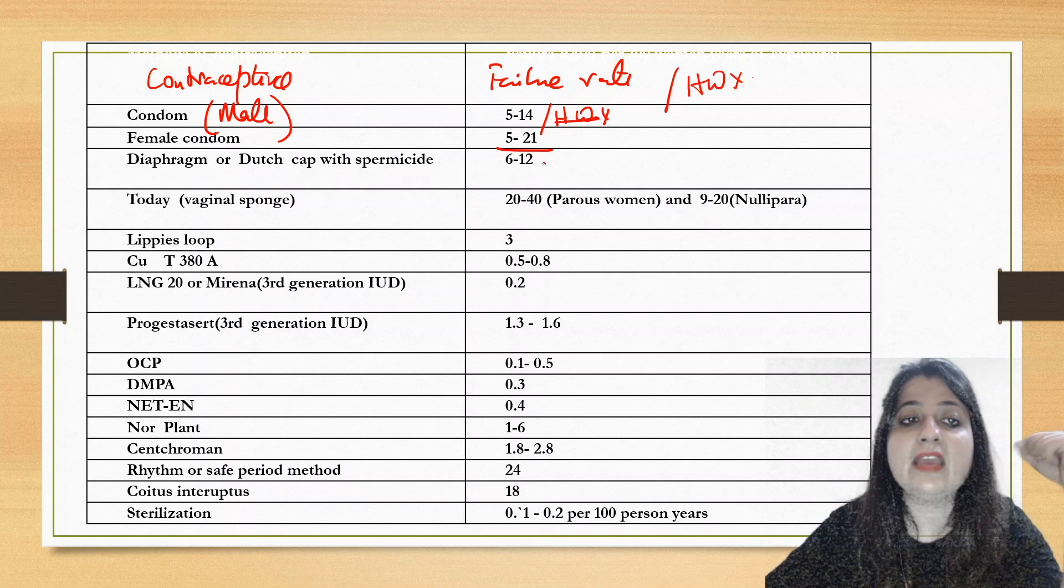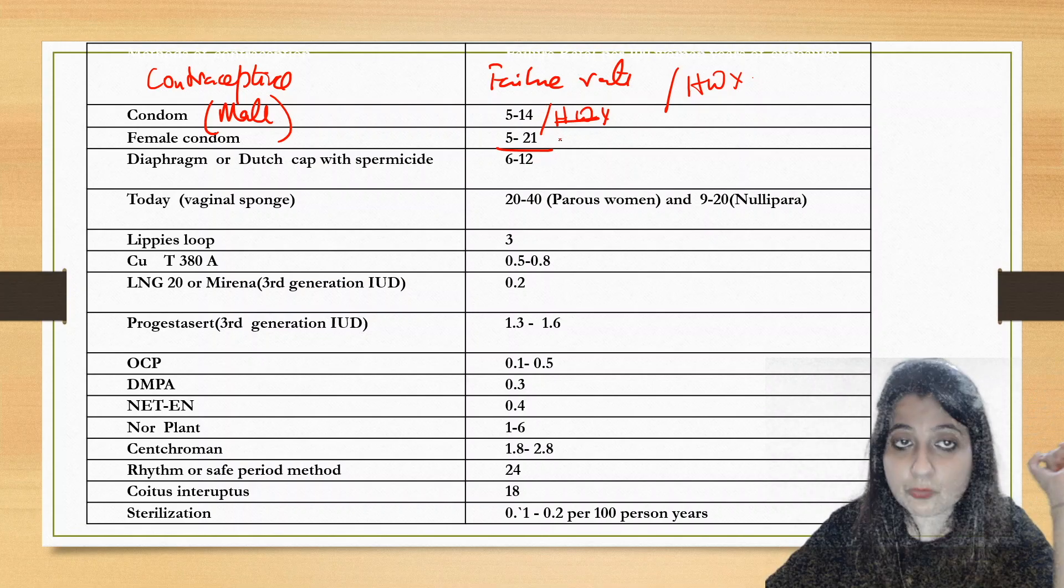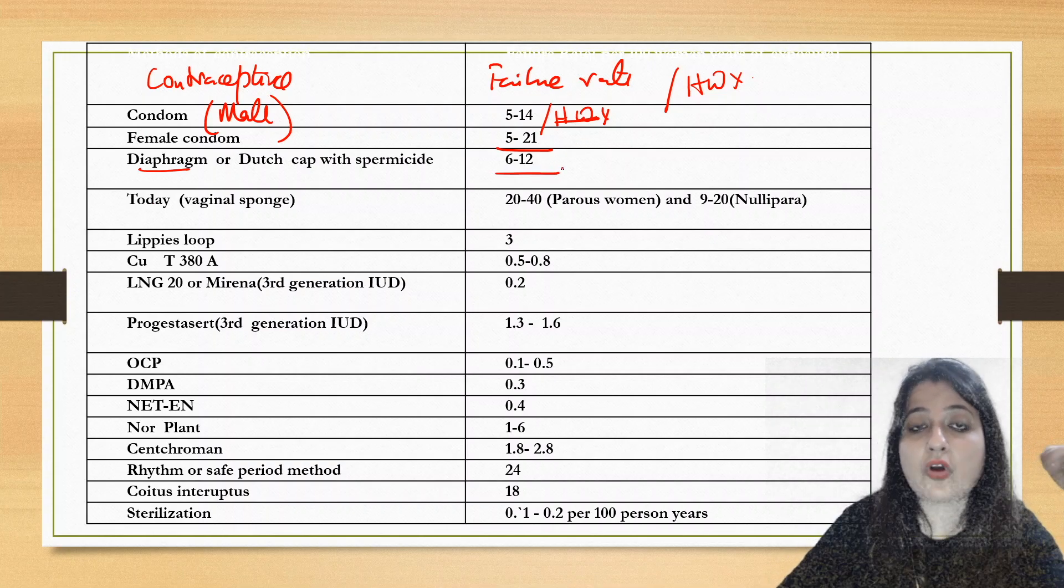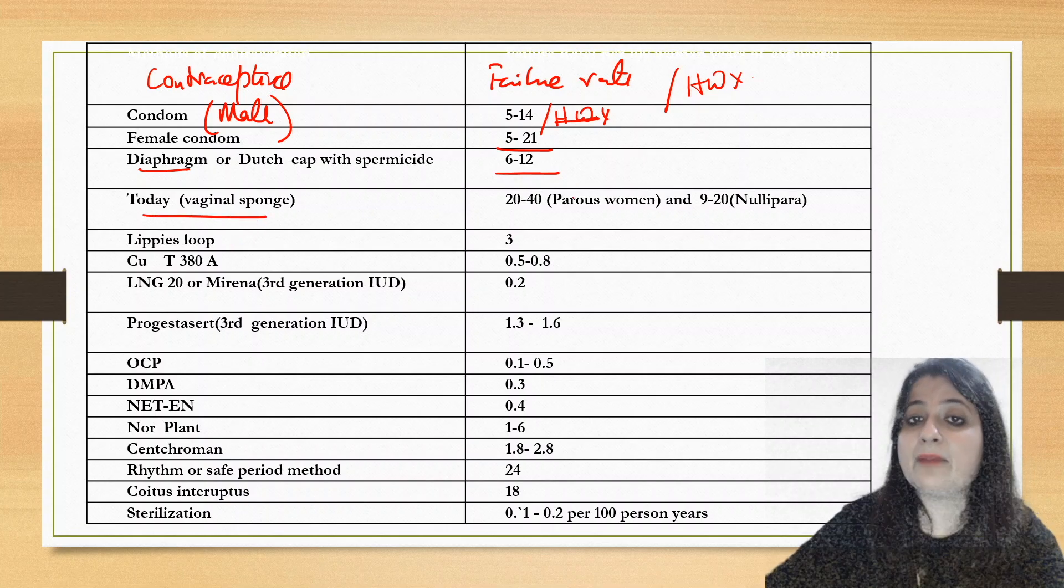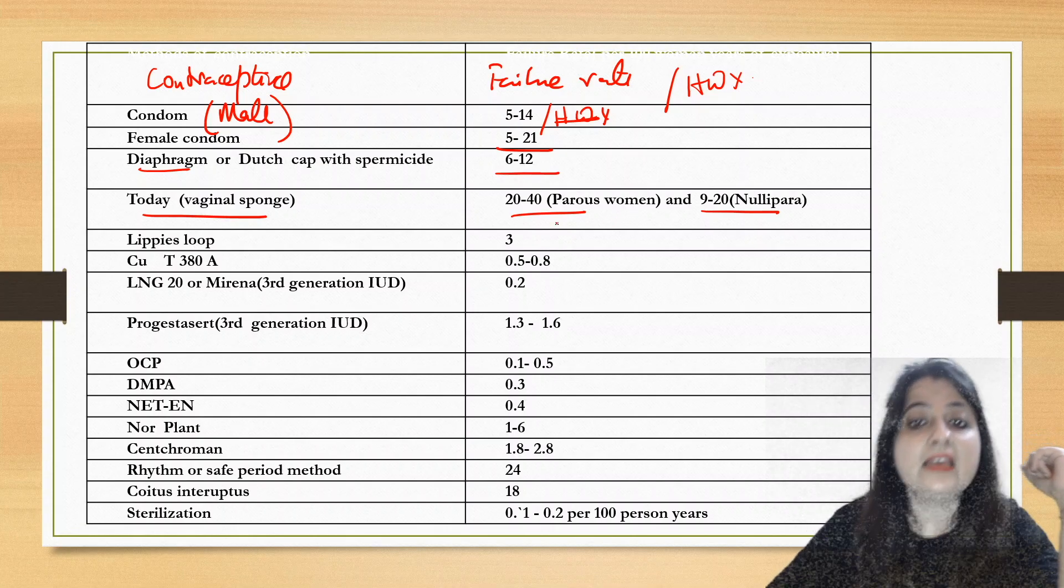Female condom: 5 to 21. Diaphragm - these are all barrier methods - 6 to 12, or dutch cap with spermicide 6 to 12. Today vaginal sponge: in parous women 20 to 40, in nulliparous 9 to 20. This can also come as an MCQ, both of these.